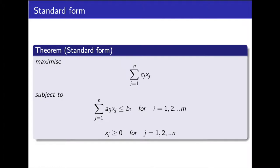Shown here is the formal definition for standard form. First, let's look at the top half. This part describes the objective function. We have: maximize the sum of cj times xj from j equals 1 to n. n is the number of variables in the objective function. This simply says: maximize the total sum of each variable multiplied by its coefficient.